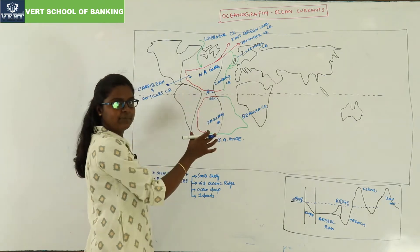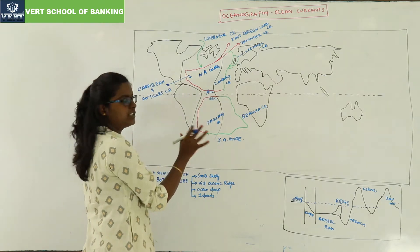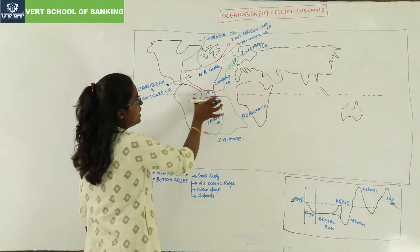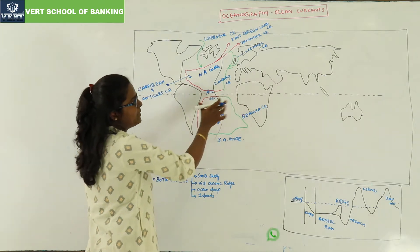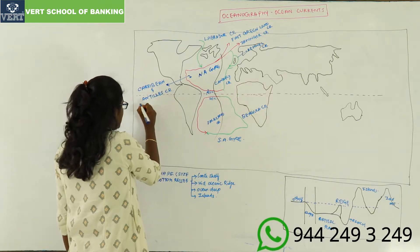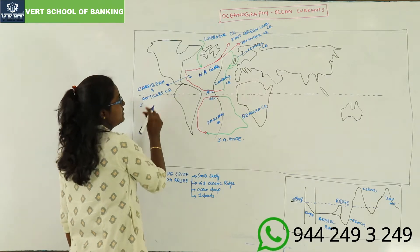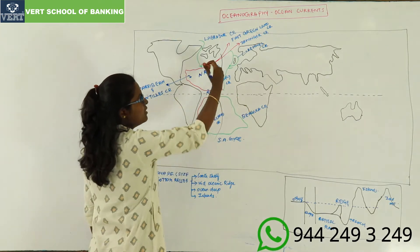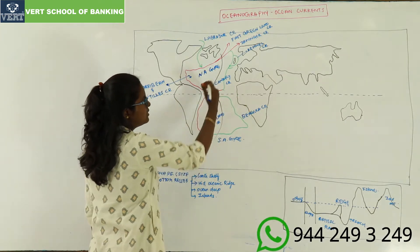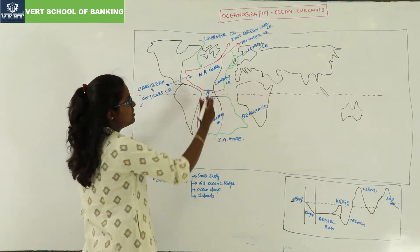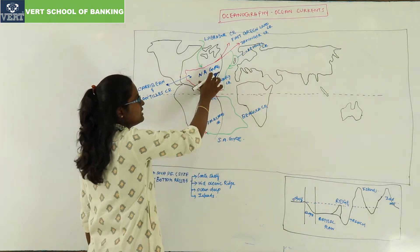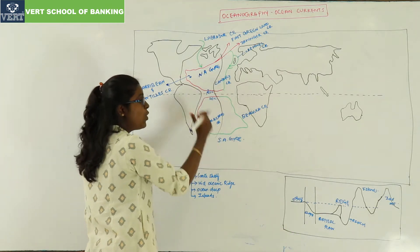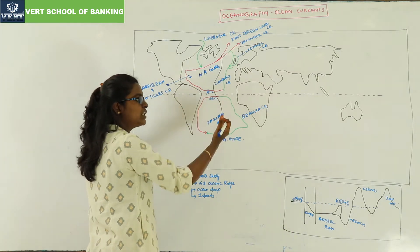The entire Atlantic Ocean is divided by the equator at 0 degrees latitude into two parts: the North Atlantic Gyre and the South Atlantic Gyre, and we will study their ocean currents.